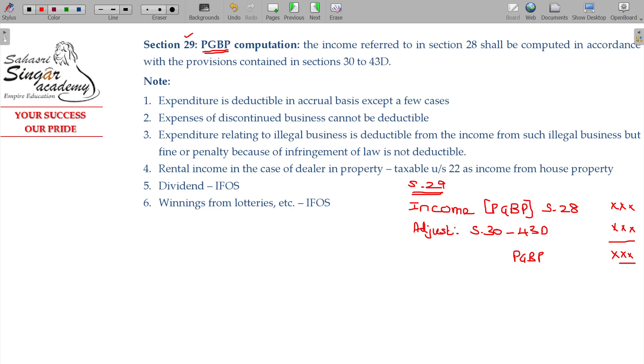What is PGBP income, which is Section 28? Then you have to adjust the provisions given in Section 30 to 43D. Then PGBP for the tax level value will be finding it out.